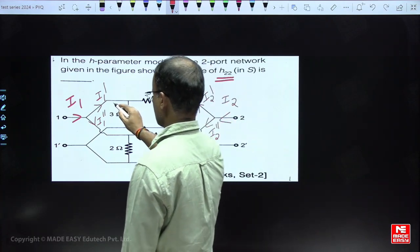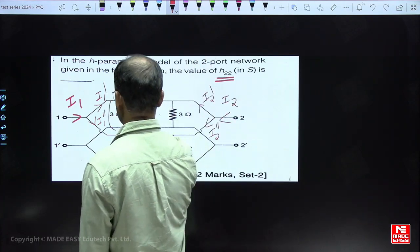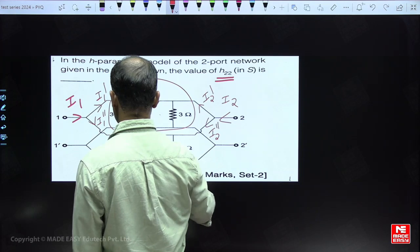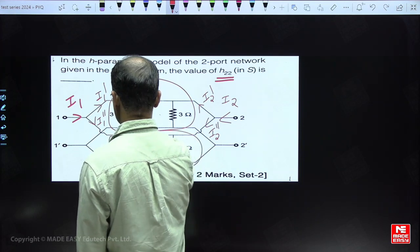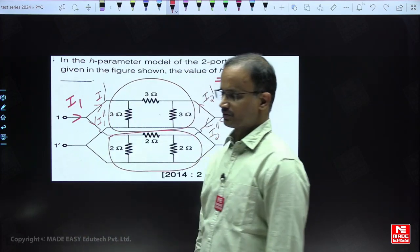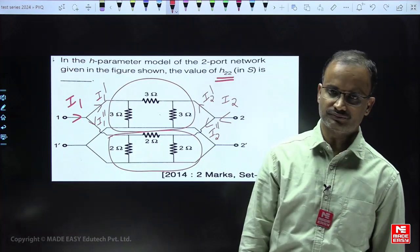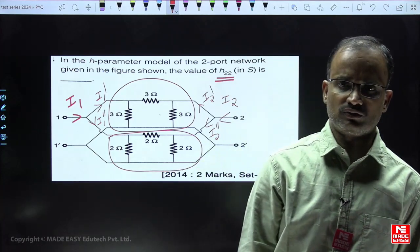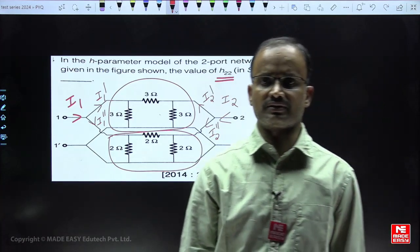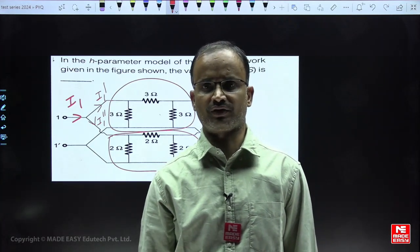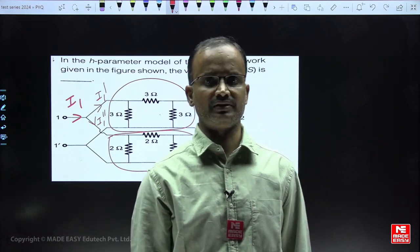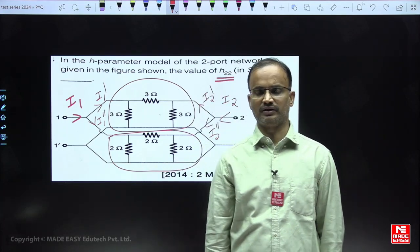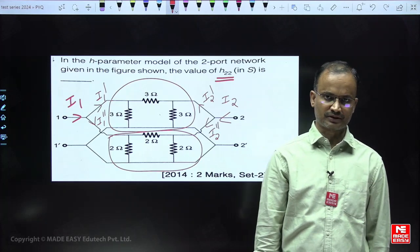This entire part is one two-port network, and the other part is the second two-port network. Whenever they are in parallel, the easy way to find the answer is to focus on Y parameters. For series, go for Z parameters; for parallel, go for Y parameters.